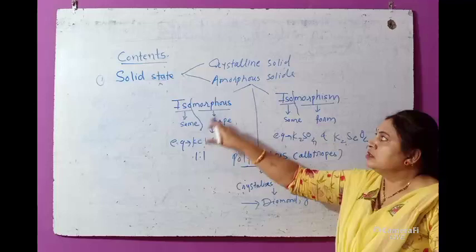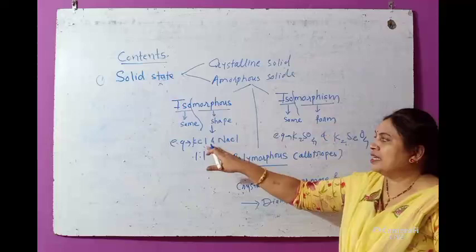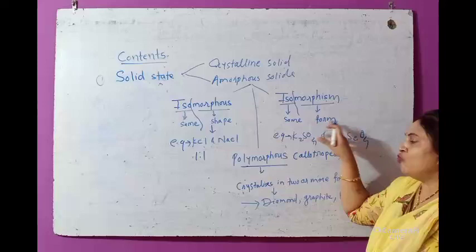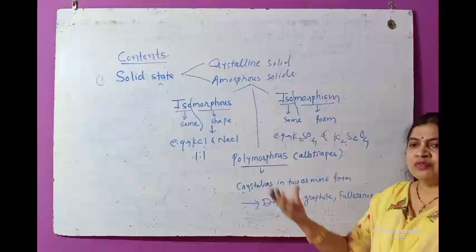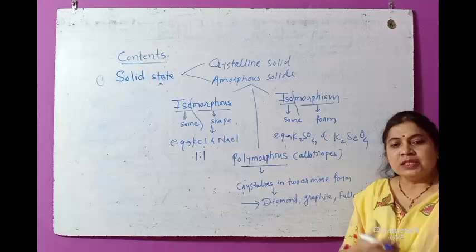This is K₂SO₄, and the next property is polymorphous, also known as allotropy. This property is also called allotropy.